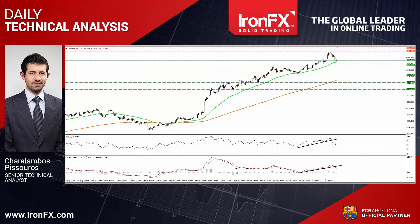USDJPY pulled back after finding resistance at 121.85, but the decline was stopped near the 120 psychological hurdle, which happens to be the 61.8% retracement level of the 1998–2012 major downtrend. Taking into account our momentum signs, I would be careful of further declines.